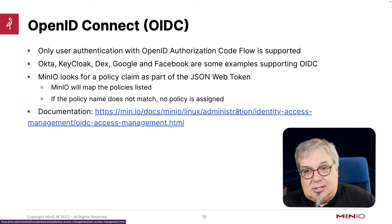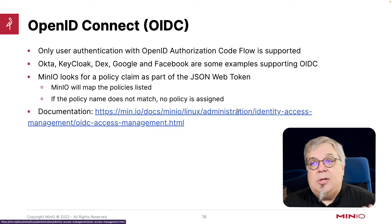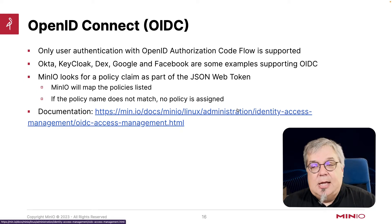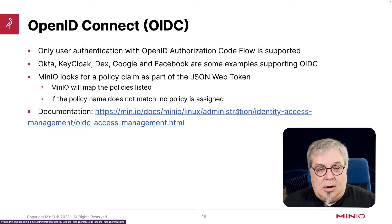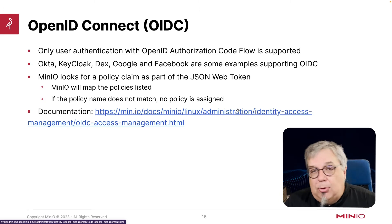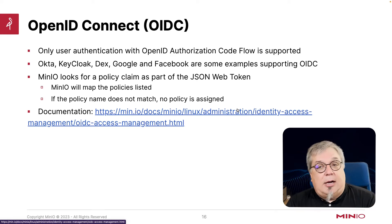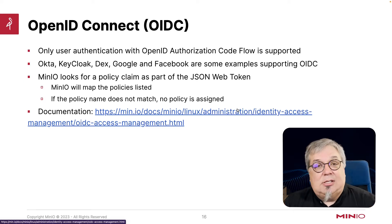With OpenID Connect, the user authentication is done through the OpenID authorization code flow. That's one of the methods available to OpenID Connect, but it's the only method that MinIO can work with — it has to use the OpenID authorization code flow. Some examples of OpenID Connect supporting services are Google, Facebook, Okta, KeyCloak from Red Hat, and DEX, which is another commonly used OpenID Connect service.